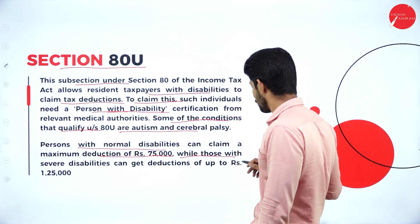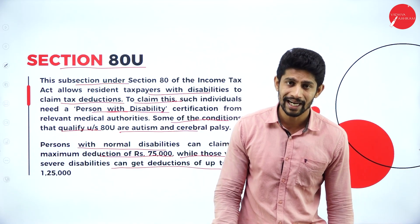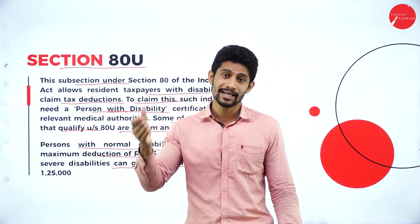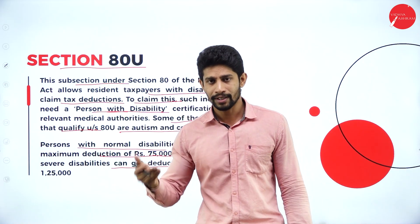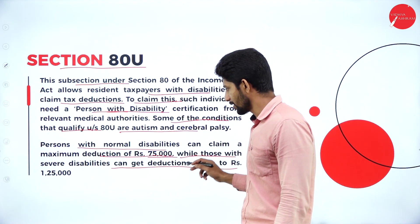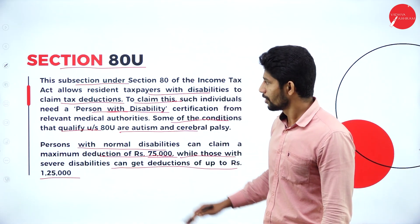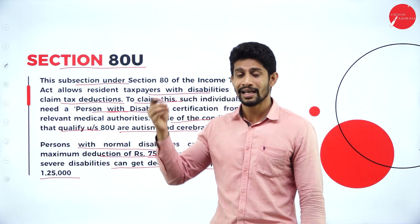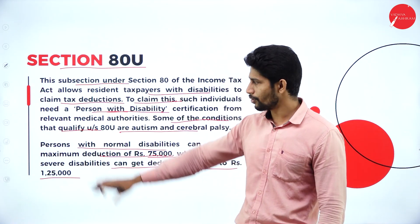Those with severe disabilities can get a deduction of up to 1,25,000 rupees. Based on what type of disability and how the authority classifies it as normal or severe disability, you can claim the deduction of either 75,000 rupees or 1,25,000 rupees — that is the maximum. Section 80U is for a person with a disability who is a resident of India.